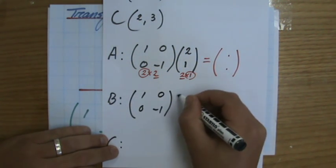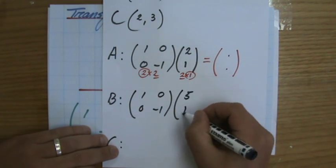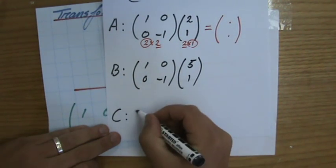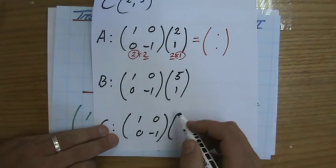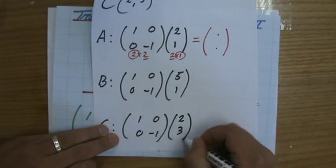So point B, 5, 1. And I'm going to do that also for point C. I'm just going to copy those matrices or the matrix three times. C is 2, 3.